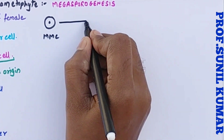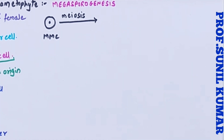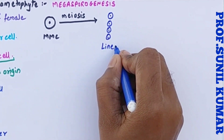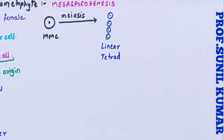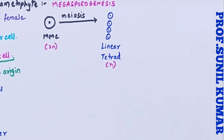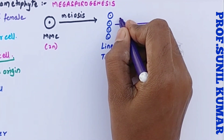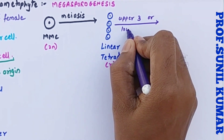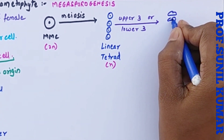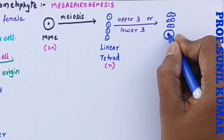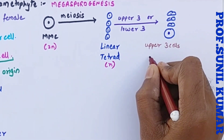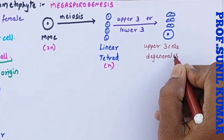The mega spore mother cell first undergoes meiosis — a reductional division — and it produces four haploid mega spores, called a linear tetrad. The upper three or the lower three cells will degenerate. Assuming the upper three cells have degenerated, all their energy goes to the last remaining mega spore, and what we finally get is the functional mega spore.